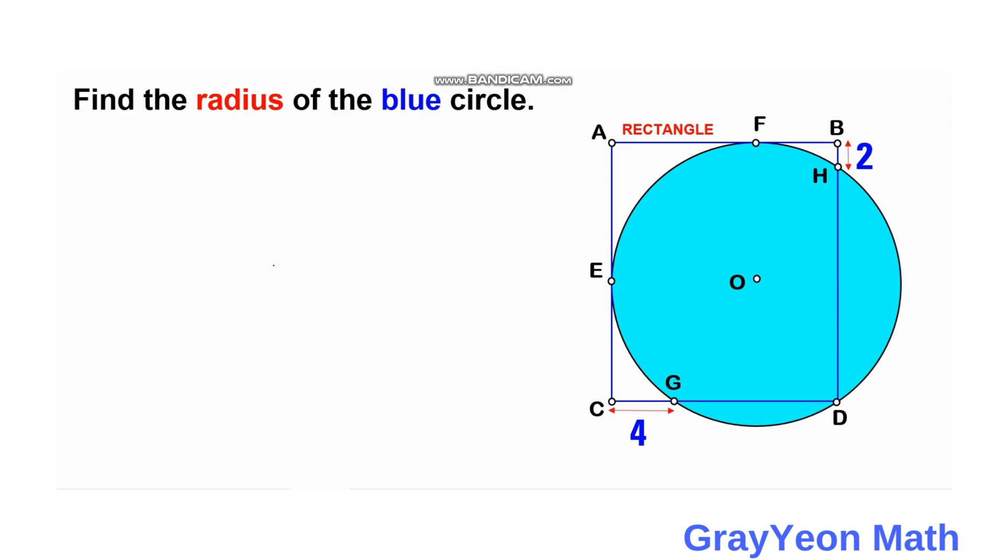Okay, so first thing that we can do is we can actually draw a horizontal line from O to the right of the circle, and we draw the radius from H to O and from O to D.